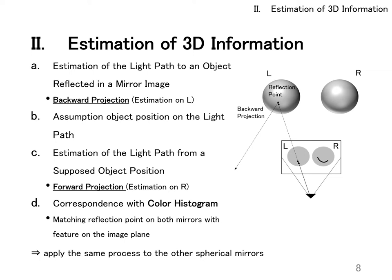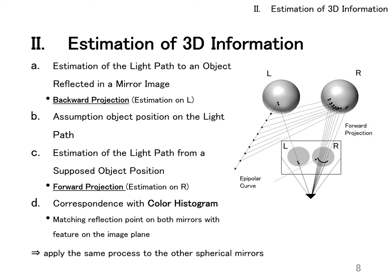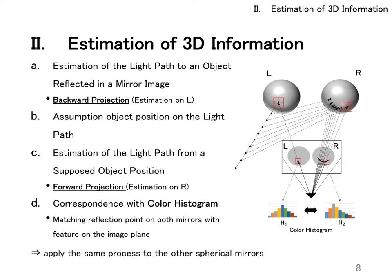This is called backward projection. Matching between the two images using color information. Second, the object is positioned on the estimated ray. Third, estimate the ray from the assumed object position to the mirror image of R. This is called forward projection. Matching between the two images using the color histogram. This process is applied to both mirror images by applying in reverse.